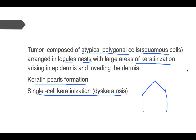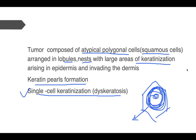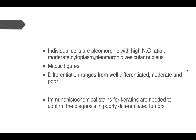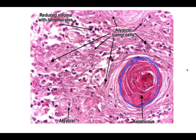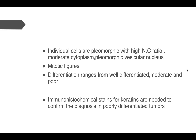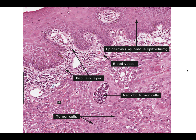The tumor cells are atypical polygonal cells with increased nuclear-to-cytoplasmic (NC) ratio and prominent nucleoli. Single cell keratinization can be seen inside cells. In the microscopy, keratin pearls are visible — whorls of keratin production — which is a characteristic finding of squamous cell carcinoma. Individual cells are pleomorphic with high NC ratio, moderate cytoplasm, pleomorphic vesicular nuclei, and mitotic figures can also be seen.